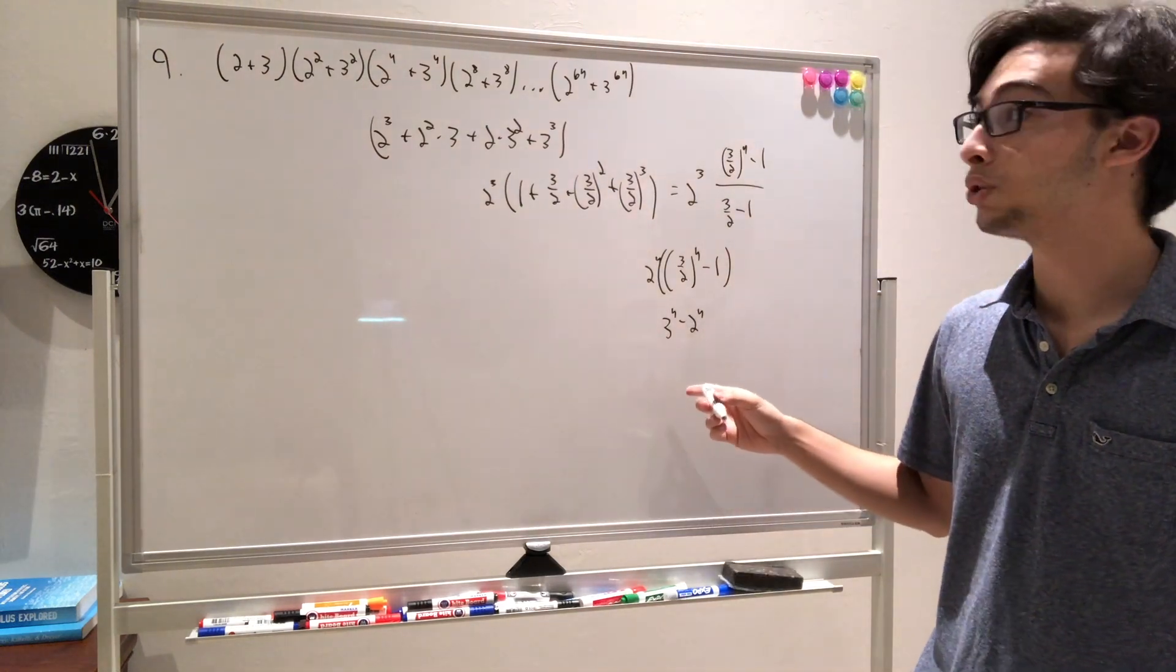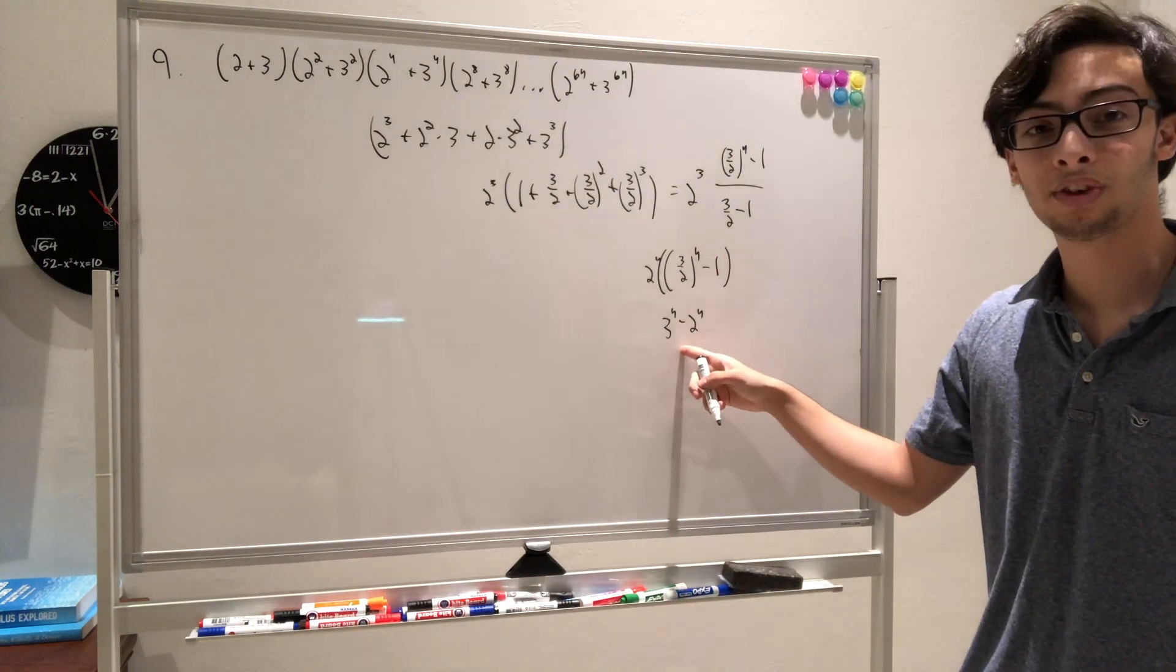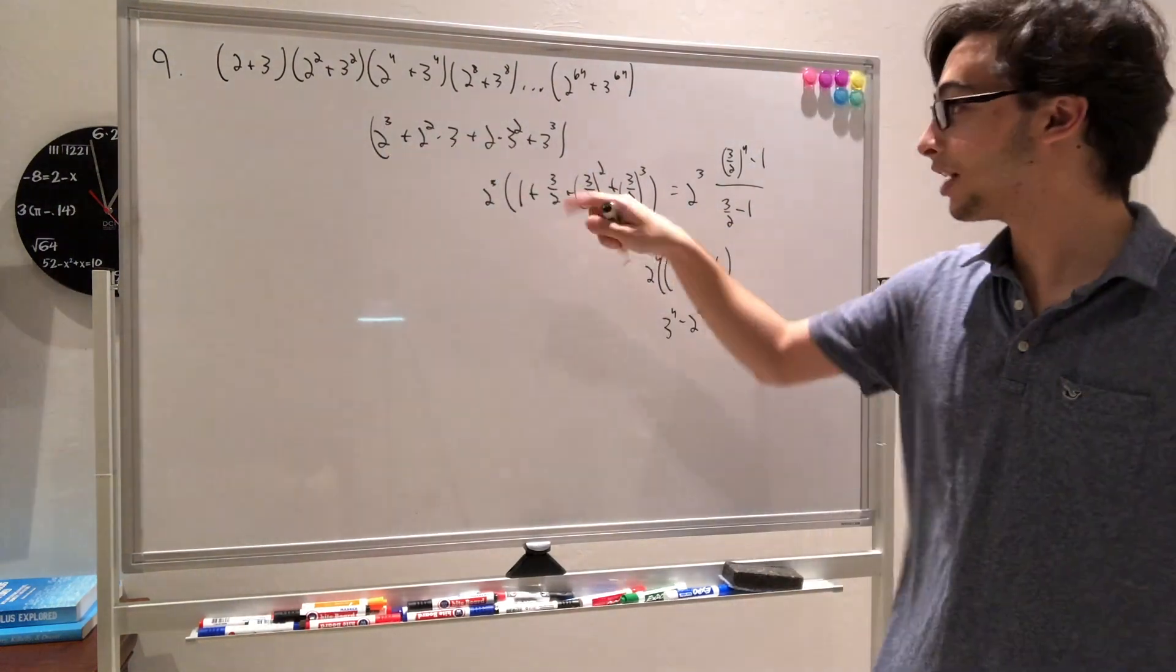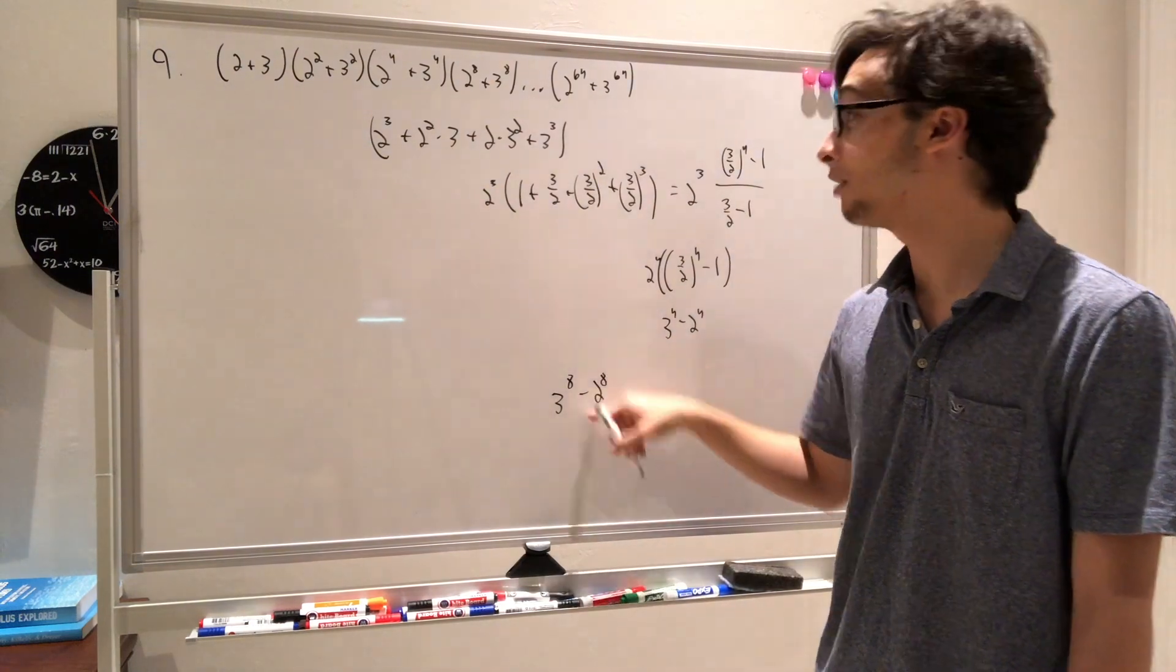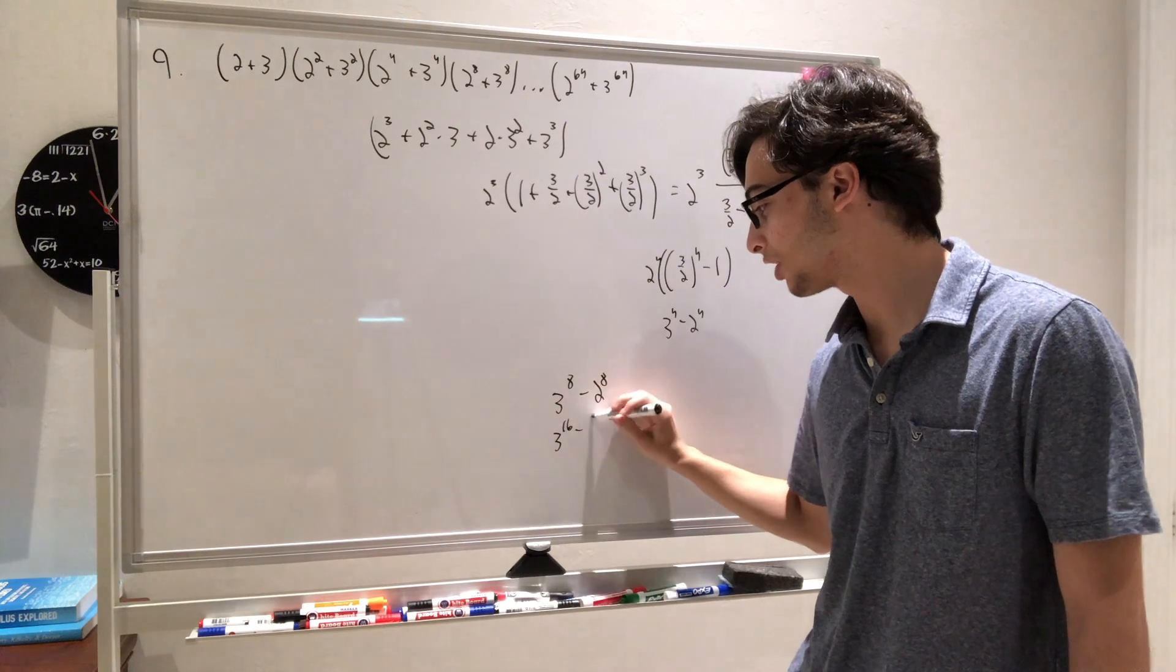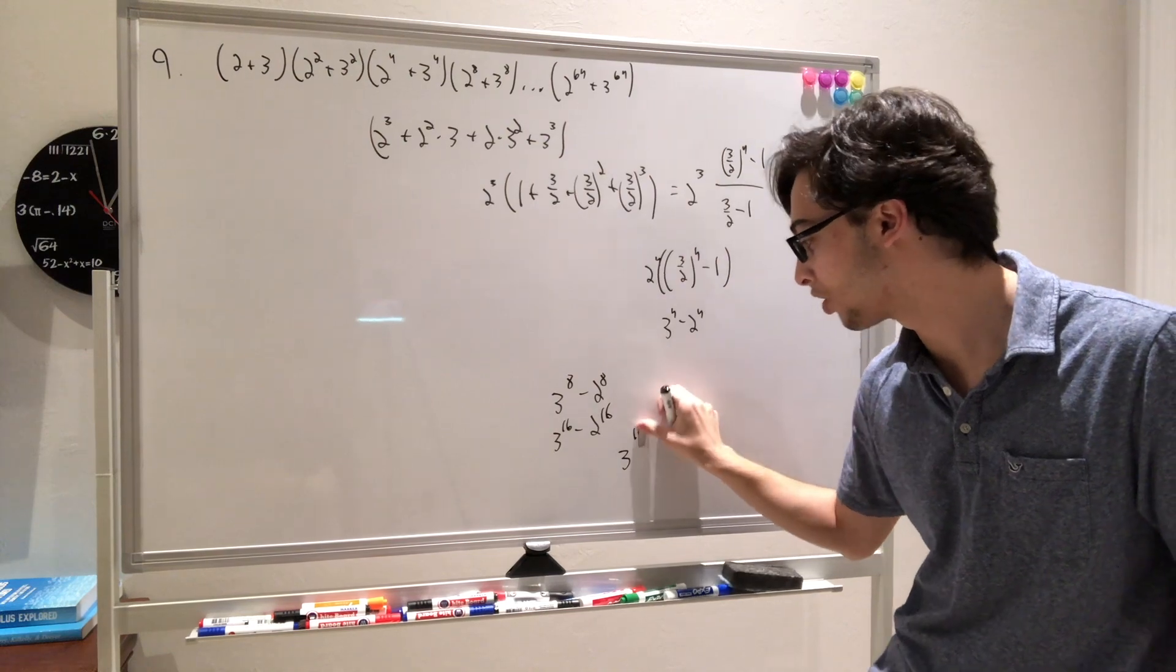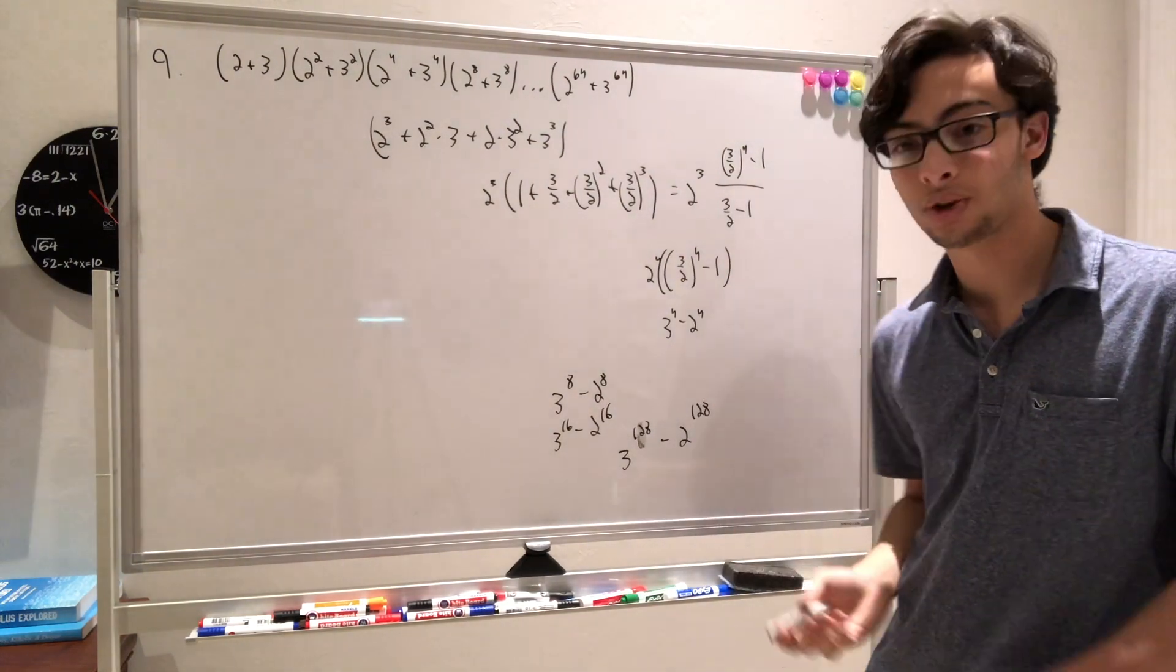And now there's many ways to write this result. From here on, it becomes really easy. Because we multiply 3 to the 4th minus 2 to the 4th by 2 to the 4th plus 3 to the 4th, that's the difference of squares. And then the result is going to be 3 to the 8th minus 2 to the 8th. And then we multiply that by 2 to the 8th plus 3 to the 8th, you're going to get 3 to the 16th minus 2 to the 16th. And you can keep doing that all the way to the end, and you're eventually going to get 3 to the 128 minus 2 to the 128. Answer choice D, and we're done.